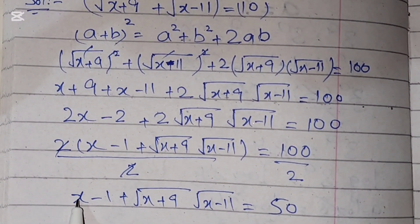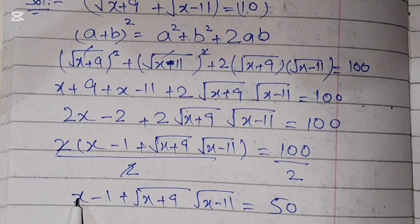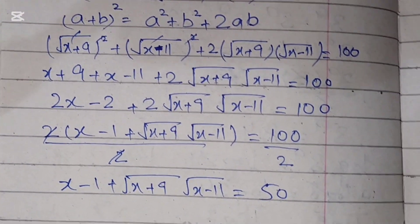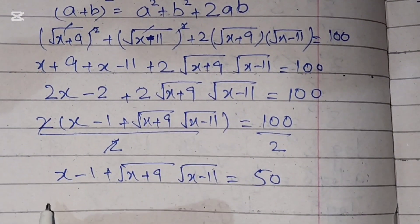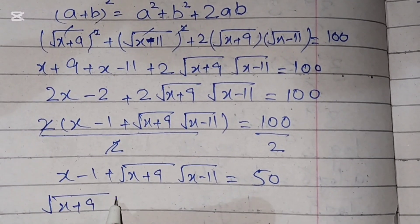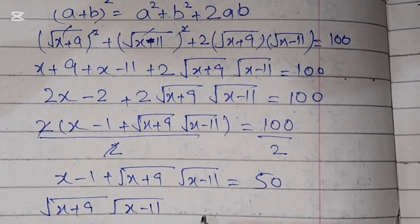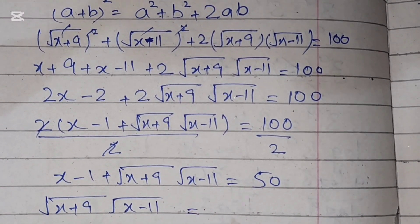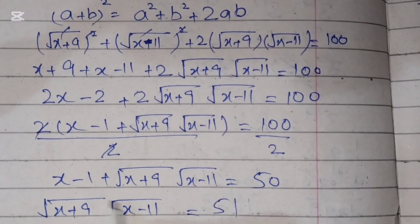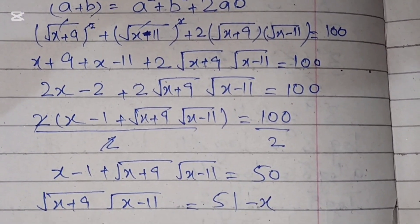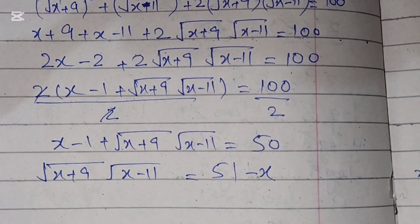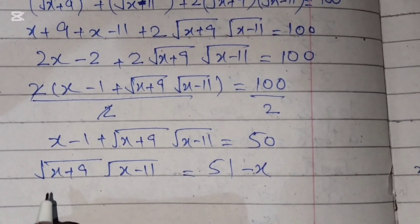We will take these two terms to the right side, so it becomes: square root of (x + 9) times square root of (x - 11) equals 51 minus x. Now once again we will take the square on both sides.